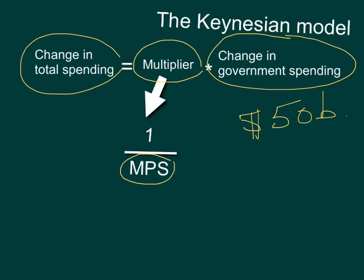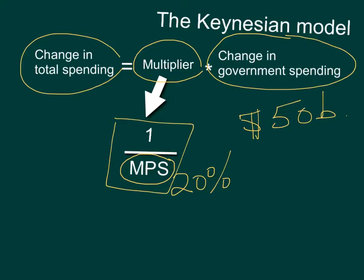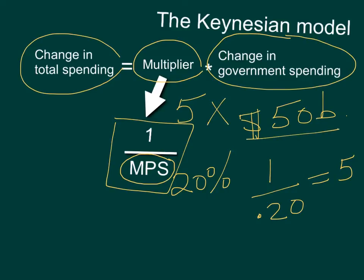So it's dependent on the MPS, the marginal propensity to save. Now if the marginal propensity to save is, let's say, 20%, so if the MPS is 20%, then the multiplier is equal to 1 over 0.20 — 1 over 20% — which would be 5. Then the change in total spending is 5 times $50 billion, or $250 billion.